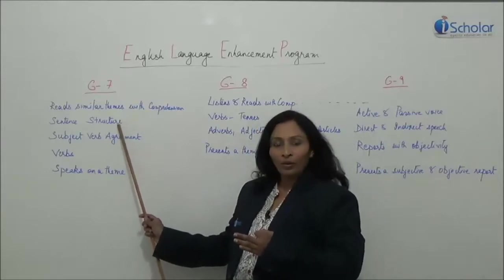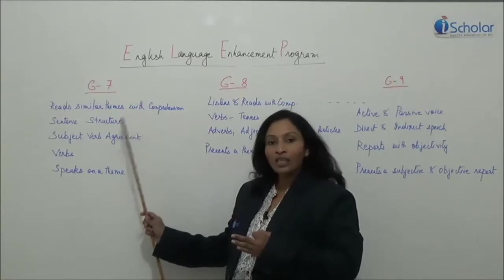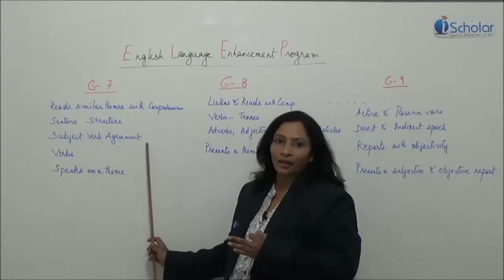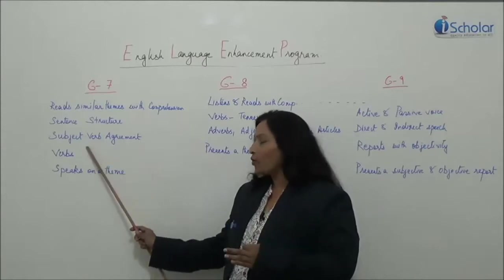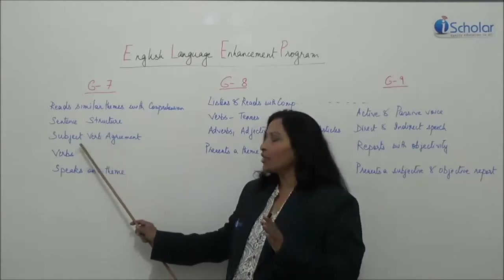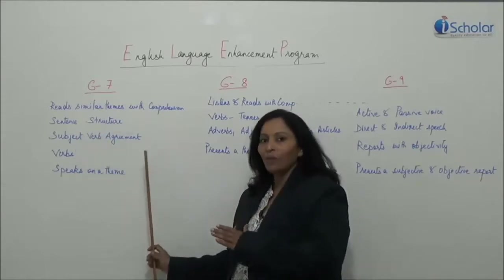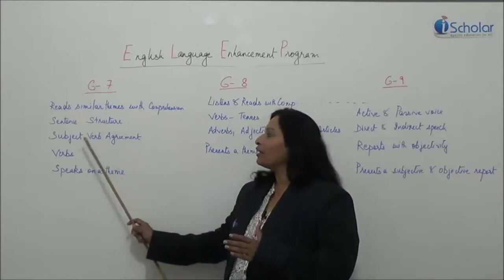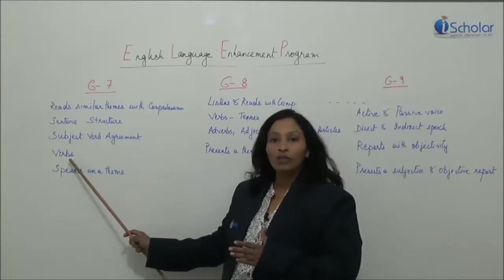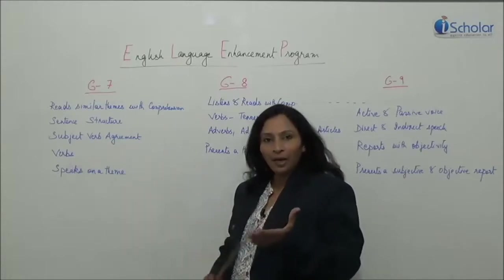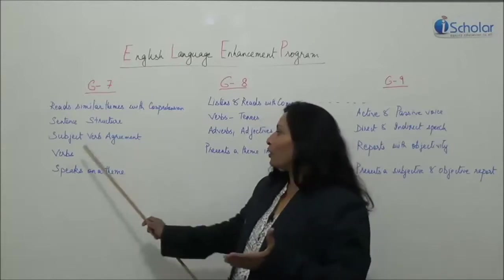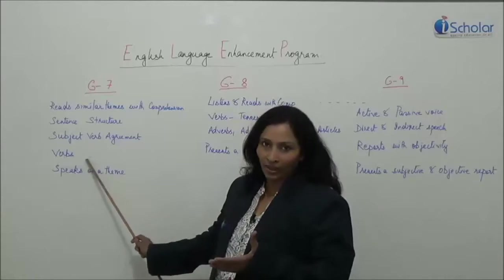We will also make them understand how unique English sentence structure is. Then we come to subject-verb agreement. As of now we will only look at number — a singular subject and a singular verb, and a plural subject and a plural verb, and the different forms of subject-verb agreement. Now we introduce them to verbs: the primary, the helping and the full verbs. We will concentrate on those verbs only at this level.